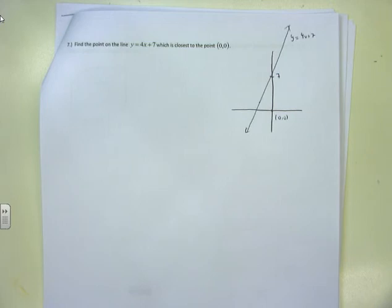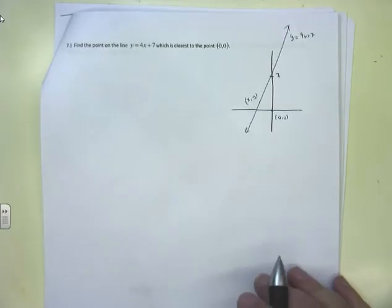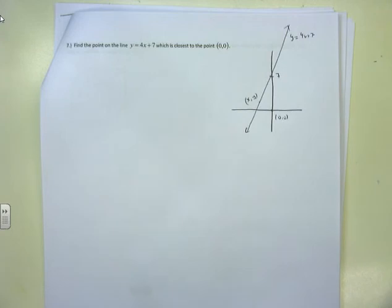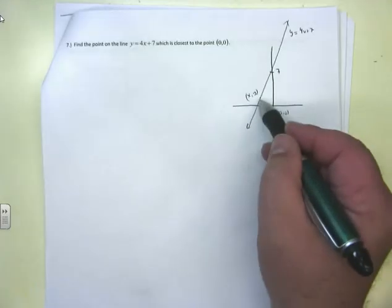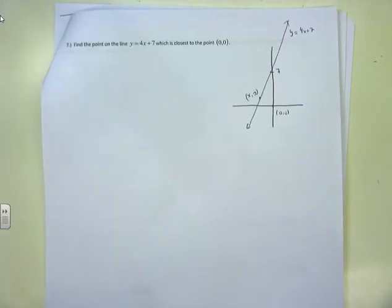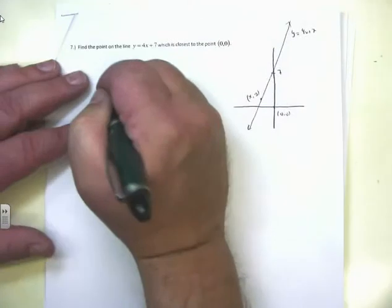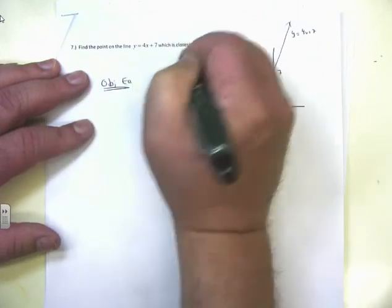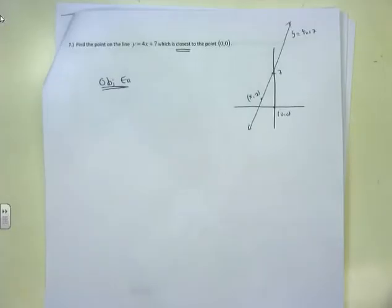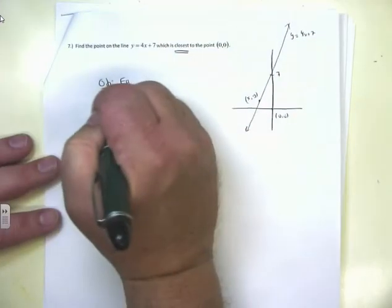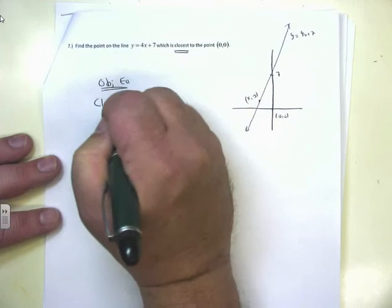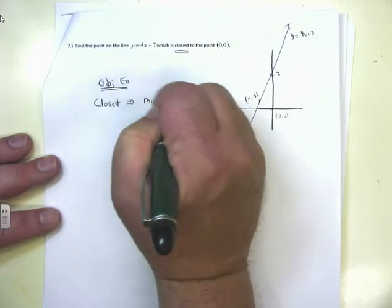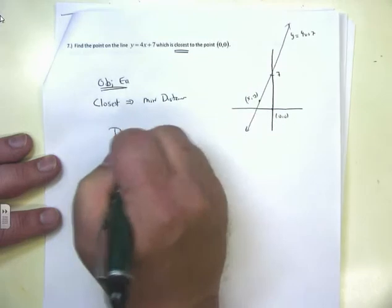The key is interpreting the word 'closest.' Closest implies minimum distance. That's the connection people couldn't make. Closest implies minimum distance, which means you need a distance formula. The distance formula is the square root of (x2 minus x1) squared plus (y2 minus y1) squared. The two points are (x, y) — the point on the line — and (0, 0). So D equals the square root of x squared plus y squared. But that's just the objective equation — there's still a constraint.